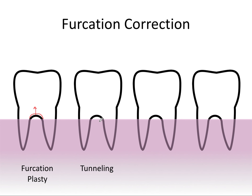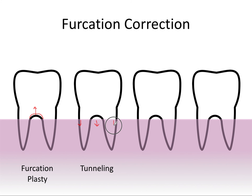The second option is called tunneling. This is a similar concept, except we do the opposite: we remove bone and move the tissues apically to purposely create a Glickman class 4, which is where you can see through to the other side, facilitating the patient's ability to keep the furcation area clean. In this treatment option, we move the tissues down.